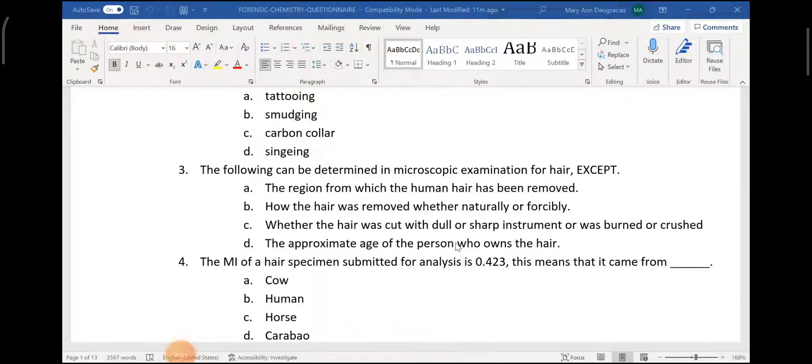Okay, the answer is 0.423, letter B. It was discussed last time in class that in order to compare human hair and that of other animals, a human hair has an MI which is less than 0.5.